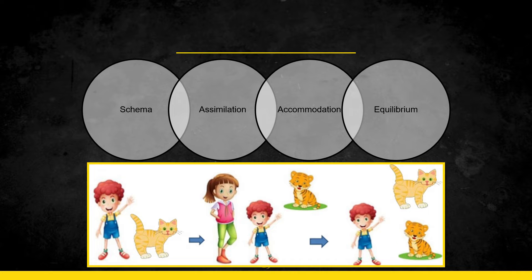Schema is basically knowledge and understanding, knowledge that helps us in understanding the world. Now the knowledge in this case is gained and later newer experiences modify the knowledge. So in the case of a kid, if you show the kid a cat and you point out to the kid and say hey this is a cat, the child registers it in his mind as something which has four legs and a tail.